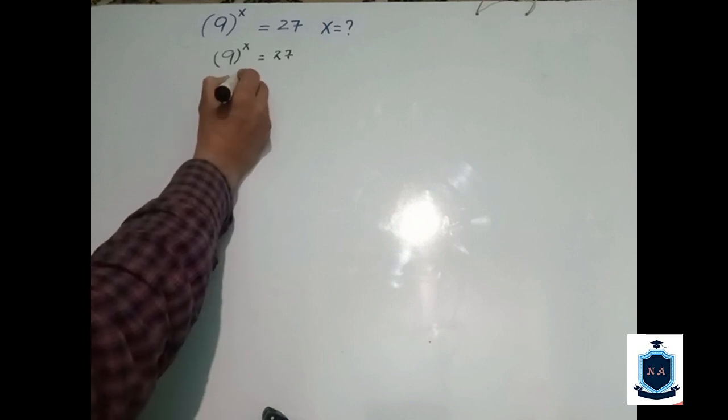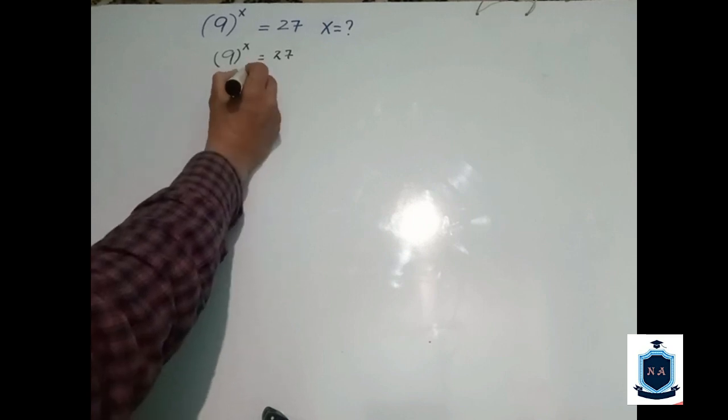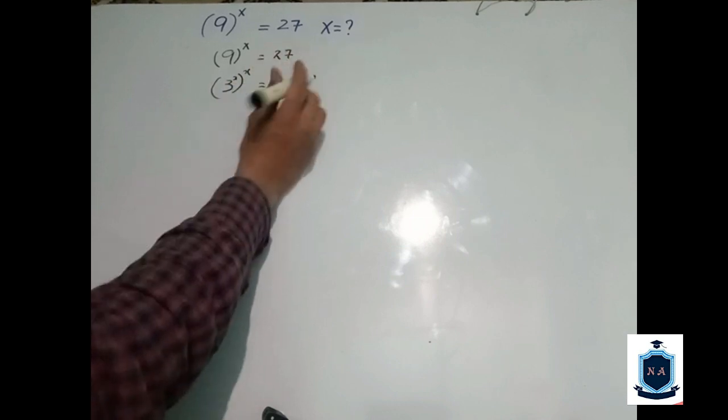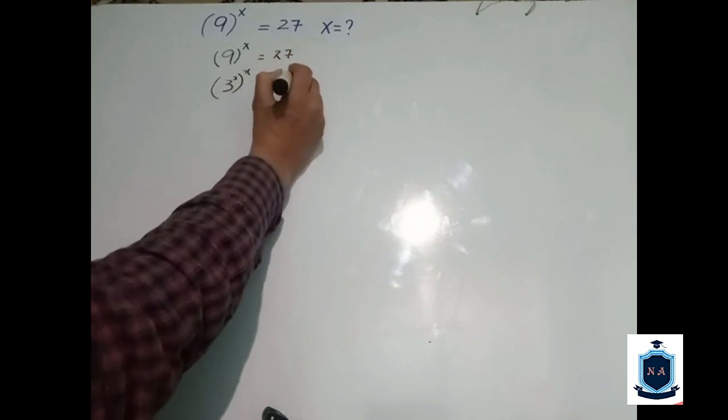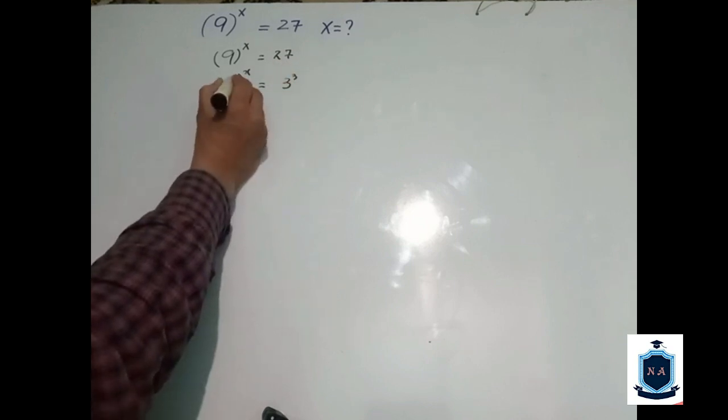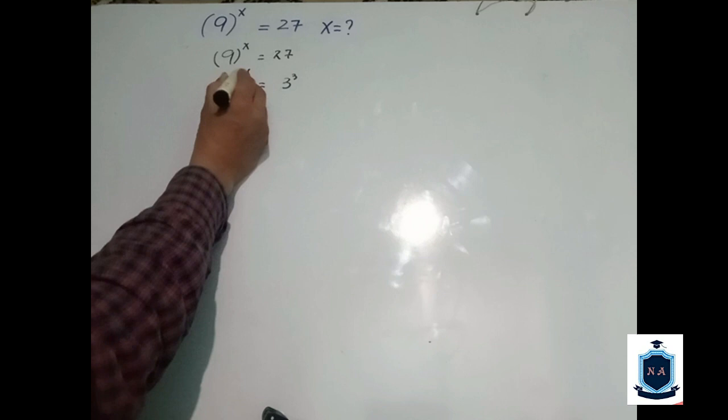3 square bracket power x equal to 27. Also 3 power cube, the answer would be 27.